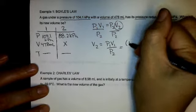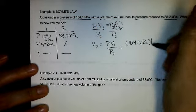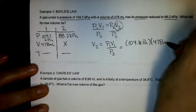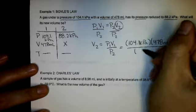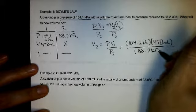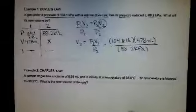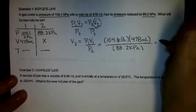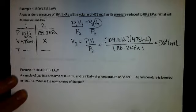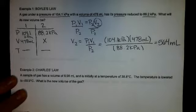I plug in 104.1 kilopascals times my volume, 478 milliliters, divided by my second pressure, 88.2 kilopascals. And that equals 564 milliliters. So as I decrease my pressure, my volume increases. That makes sense.